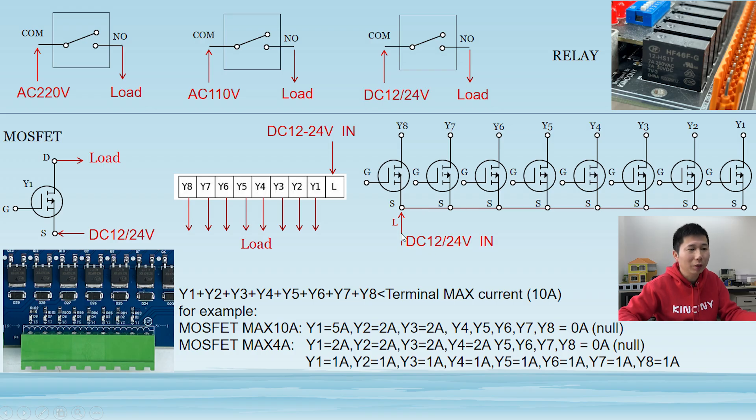So this PCB board, have a track, that is L, go to these 8 MOSFET. So you can see, if you use this green terminal, you know, the max current, is 10A. So, that, at this, Y1, at Y2, at Y3, and until Y8, this total current, must, less than, this terminal max current. Because you can see, that all have connected together, with just, only one L terminal port.